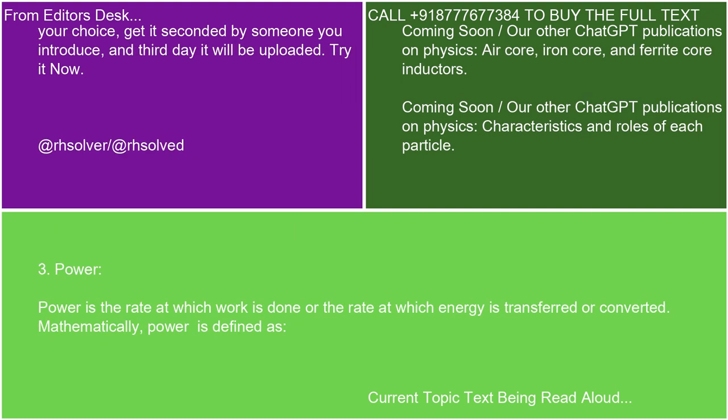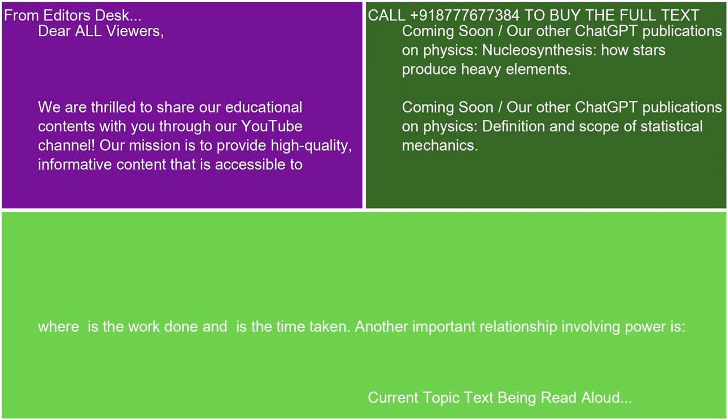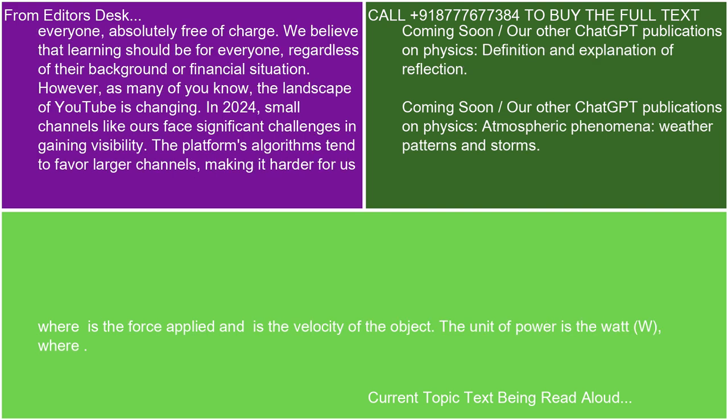Power is the rate at which work is done or the rate at which energy is transferred or converted. Mathematically, power is defined as P = W/t, where W is the work done and t is the time taken. Another important relationship involving power is P = F × v, where F is the force applied and v is the velocity of the object. The unit of power is the Watt (W).